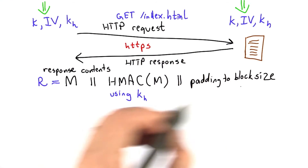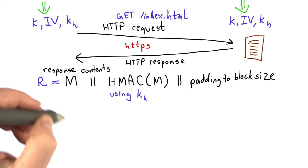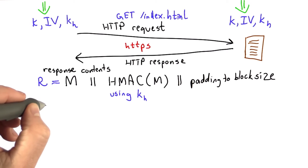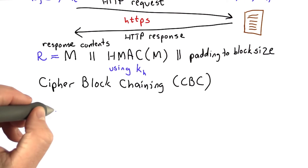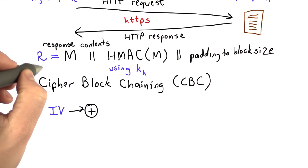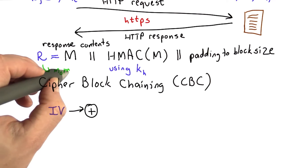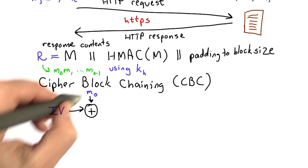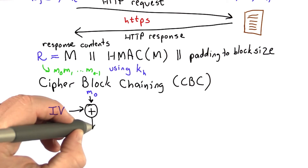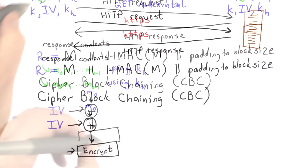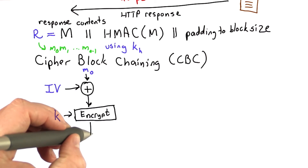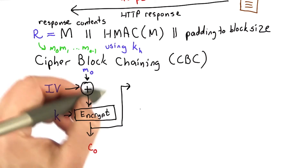The way this is done with the TLS record protocol is to use CBC — cipher block chaining mode of operation — with some encryption function. We talked about CBC mode in Unit 2. As a reminder, there's an initialization vector, and we break the message into blocks M0, M1, up to M(N-1). The first message block is XORed with the initialization vector, the output of that is encrypted using a key — the key that resulted from the handshake protocol — and this results in the first ciphertext block, which becomes the input to the next XOR.